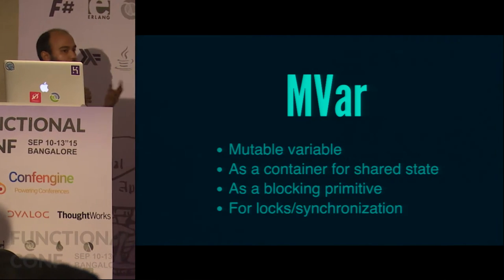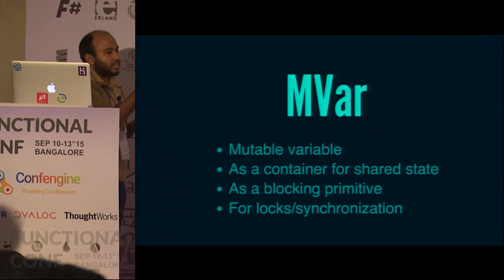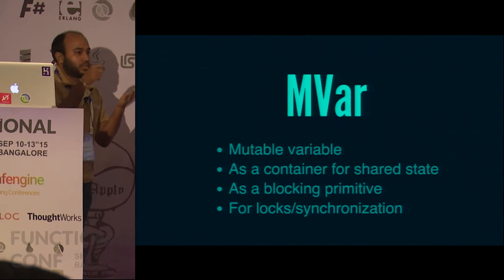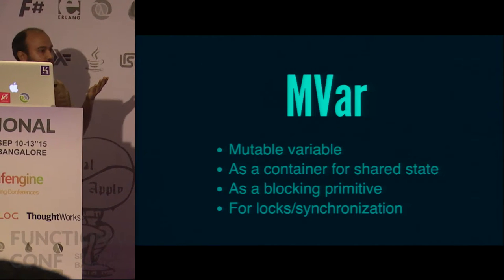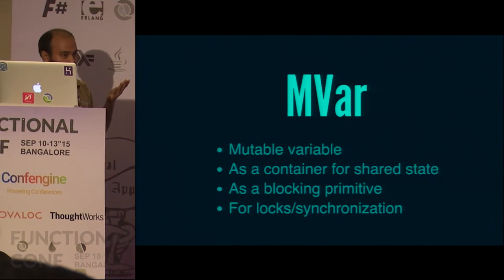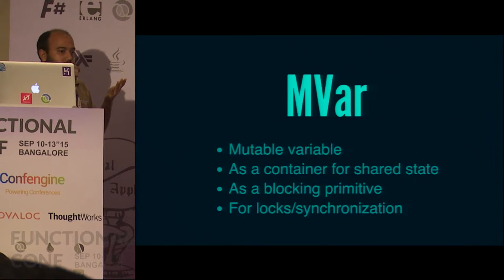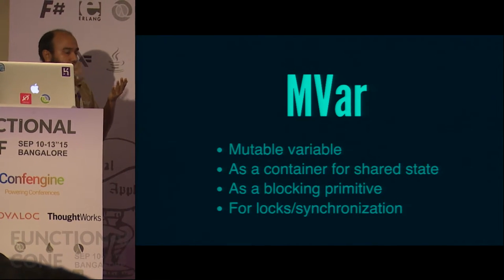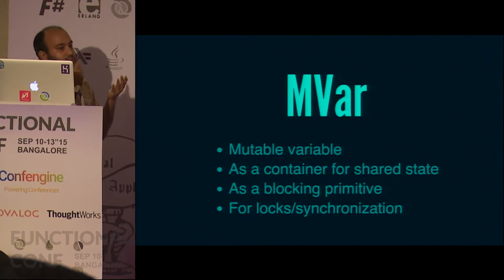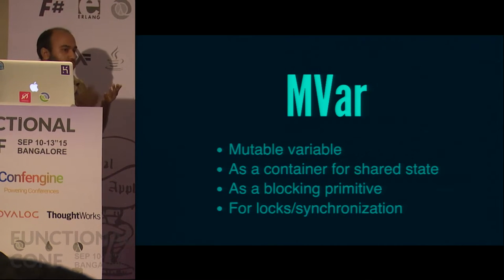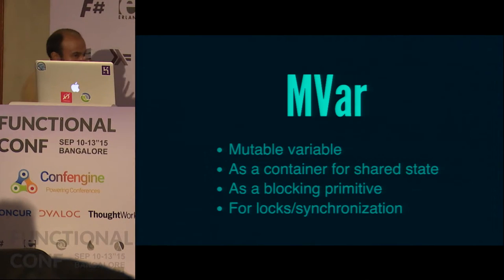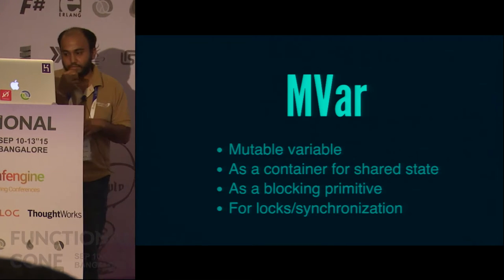MVar is also a blocking primitive. It gives you two operations: put MVar and take MVar. A put blocks if the MVar is already full — you cannot put a new value in and your thread blocks. Similarly, if the box is empty and you do take MVar, your thread blocks. So it's like a single-cell blocking queue. You can already see how you can use it for synchronization and locks between different threads.